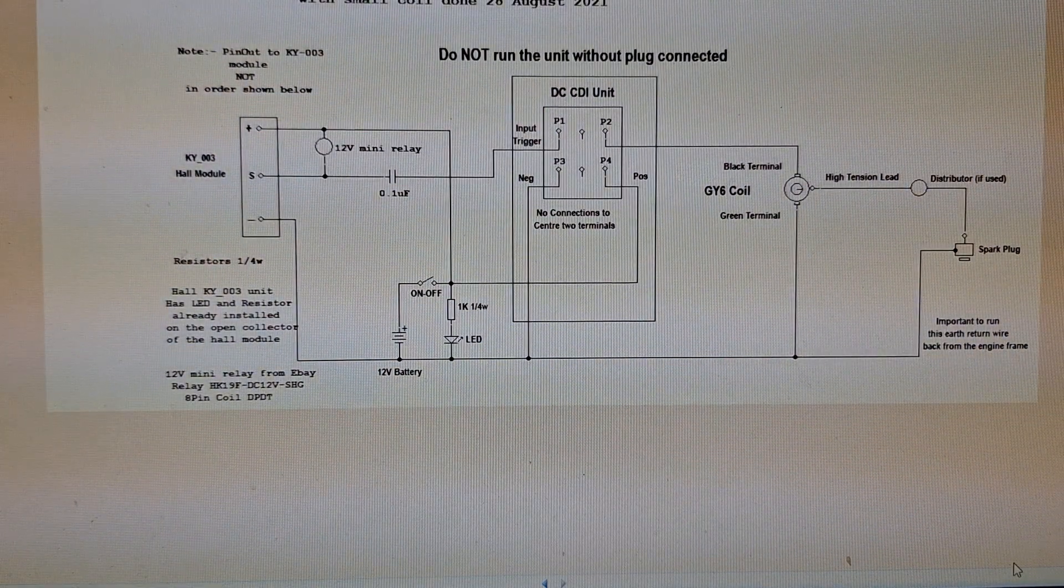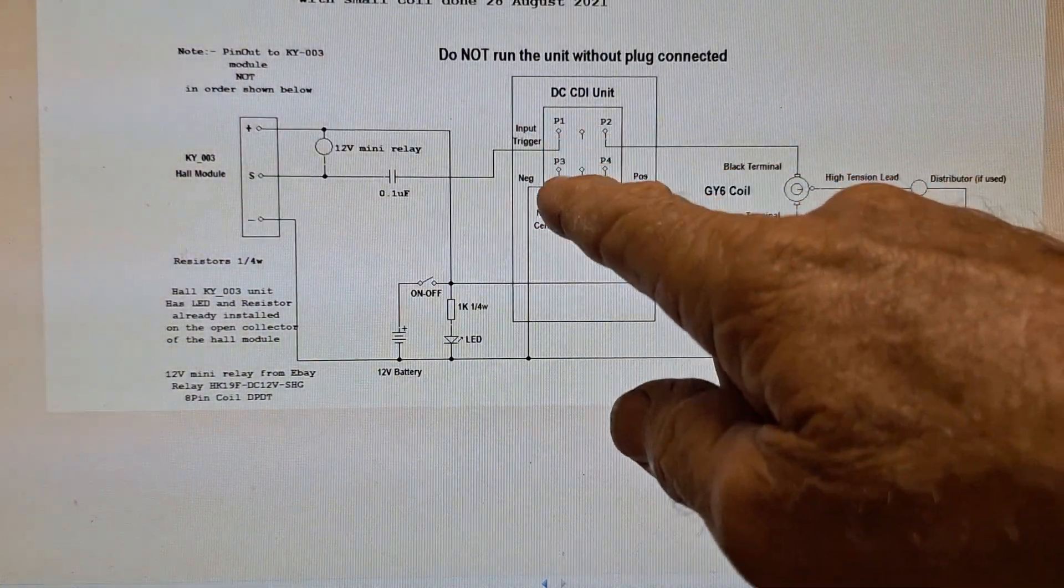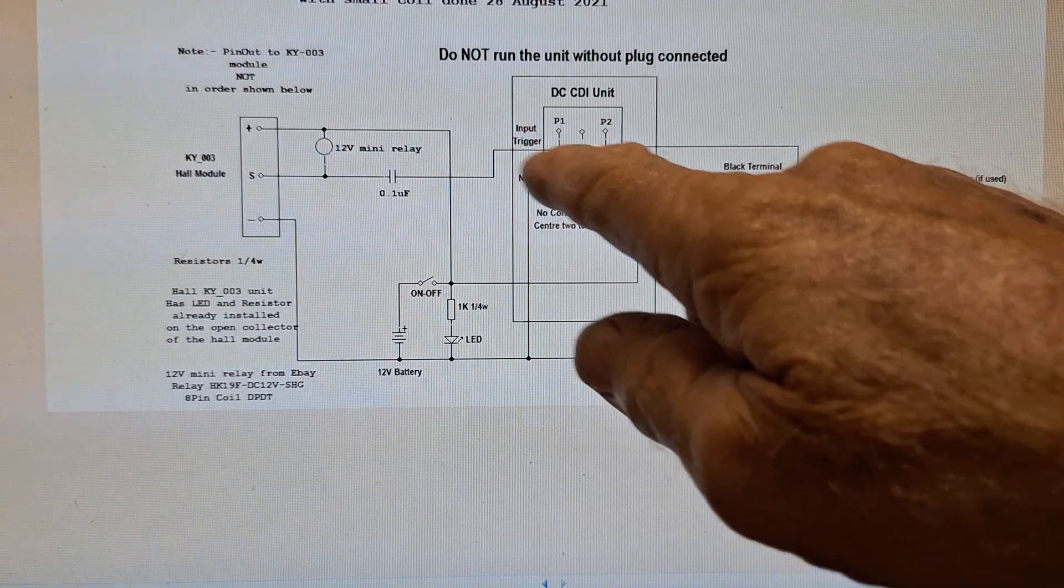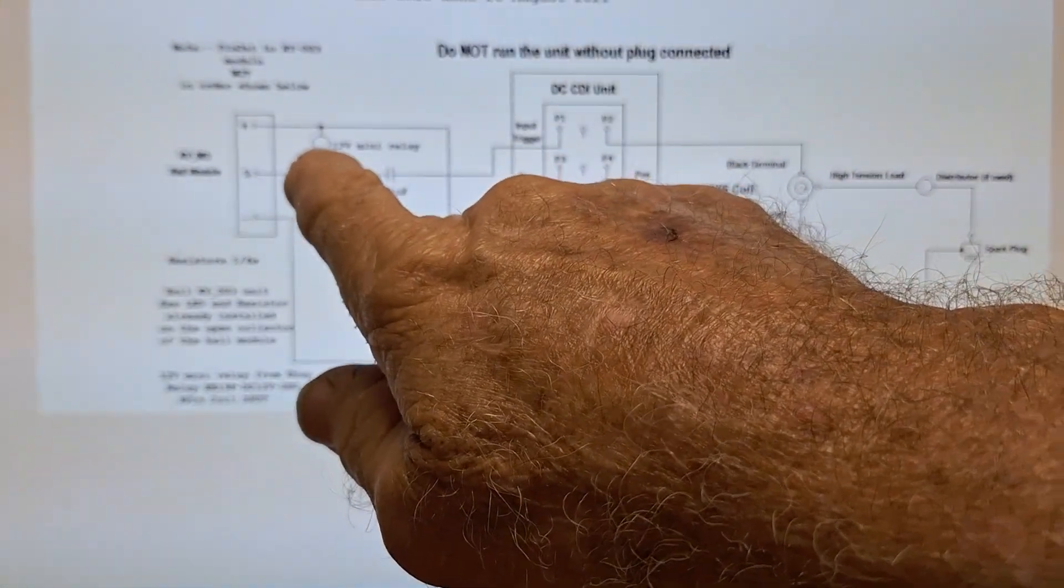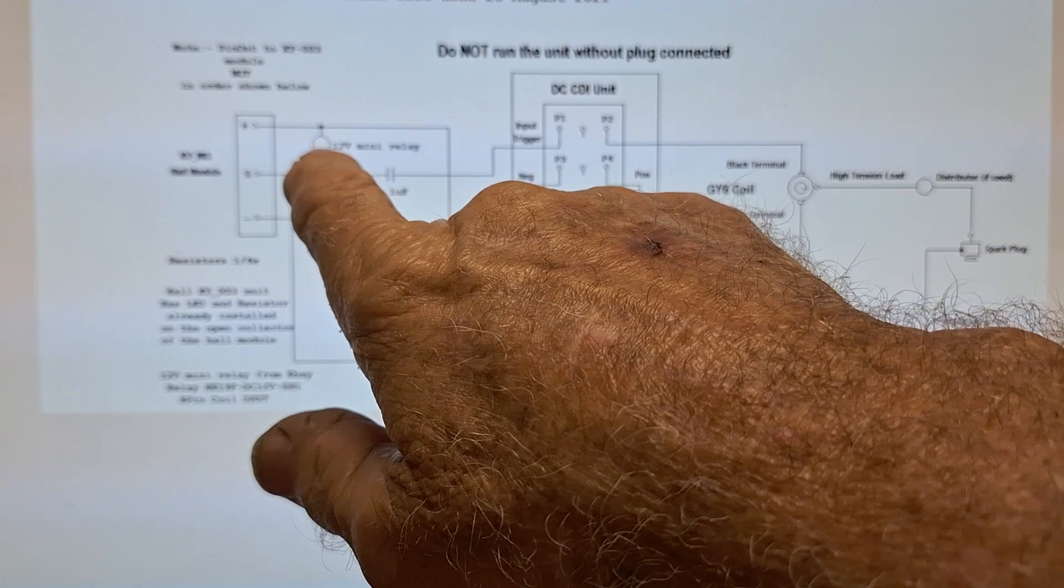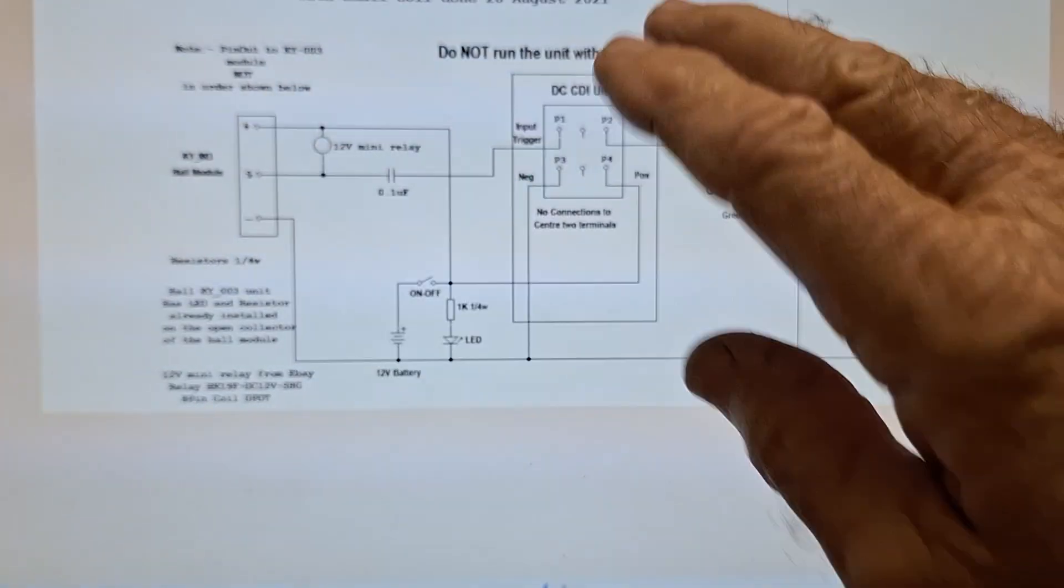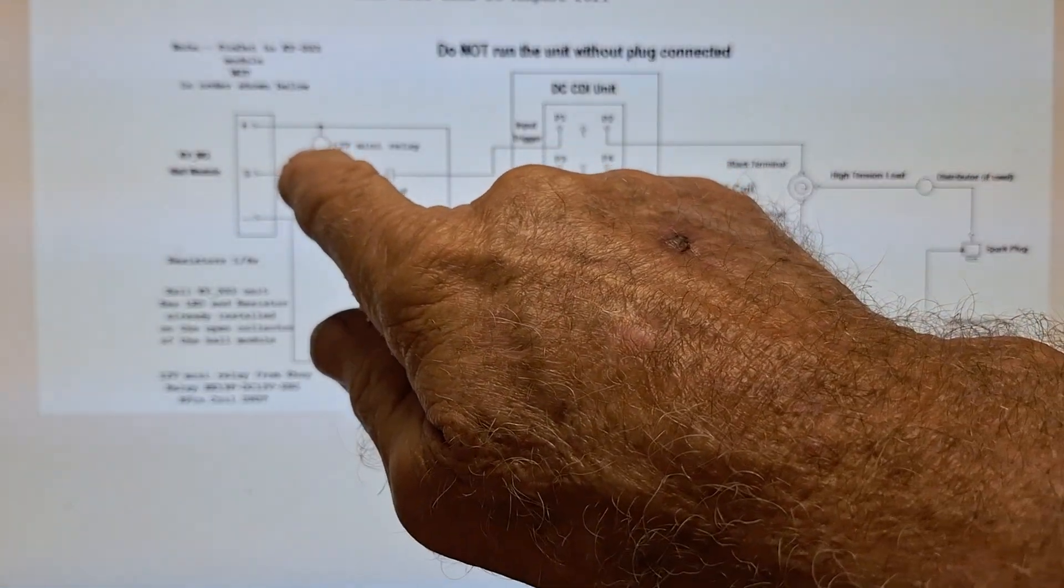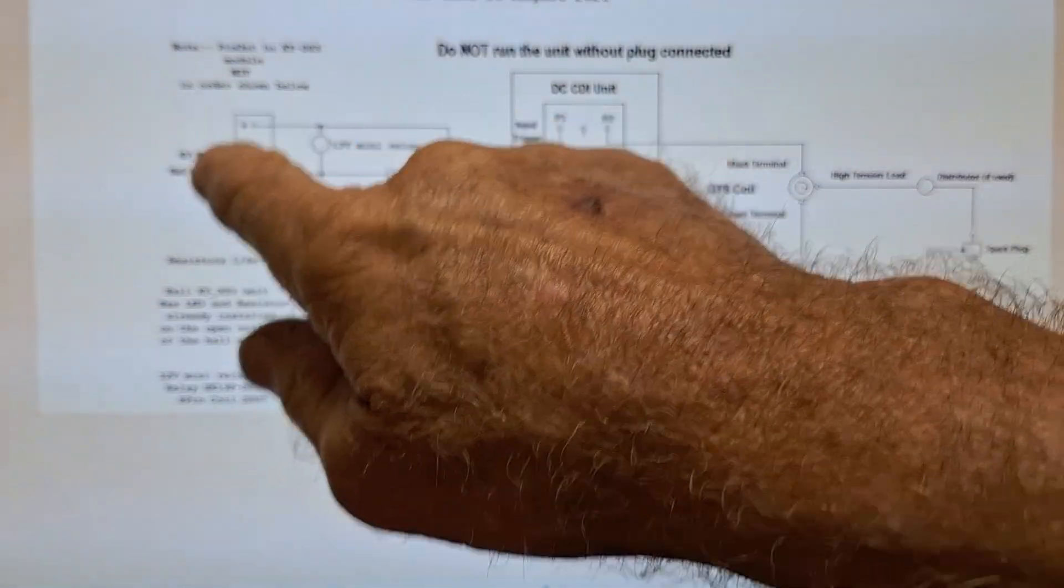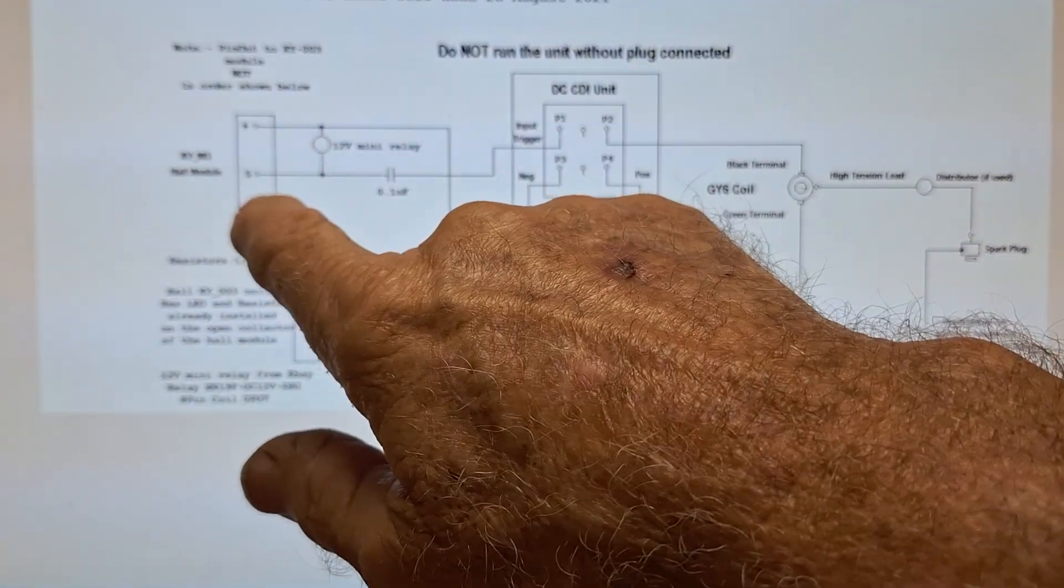There, this here is the CDI module. That is the tiny, the little coil out of the relay, not the actual relay contacts themselves, just the coil. Condenser, this is the KY003 Hall Effect module.